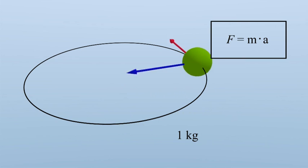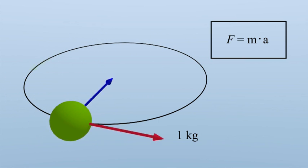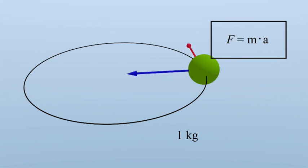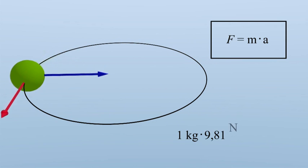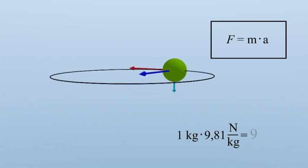In Central Europe, the acceleration due to gravity is about 9.81 meters per second squared, or in other words, 9.81 Newtons per kilogram. So the weight of the object is 9.81 Newtons, directed downwards.